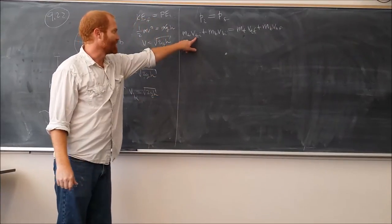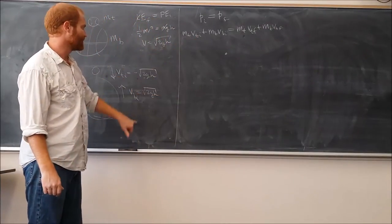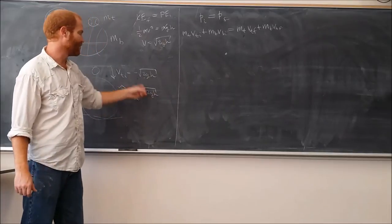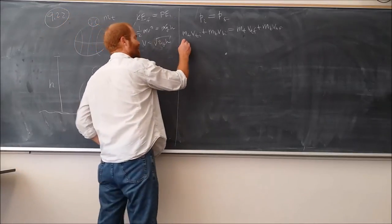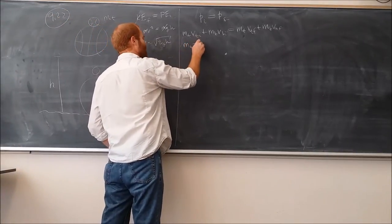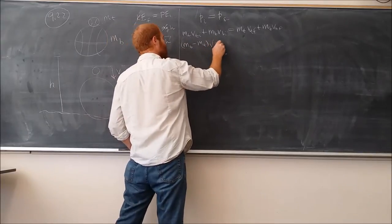The velocity of the tennis ball is given by this. The velocity of the basketball is the same. One's positive, one's negative. So we'll get MB minus MT times square root 2gh.